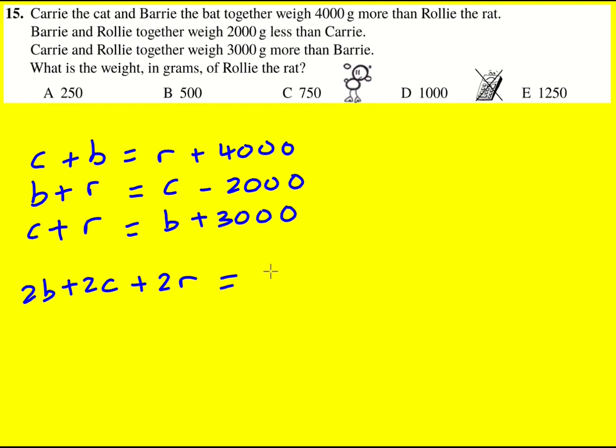So here, the reason is that we're going to get the same thing—we're going to get B + C + R on the right-hand side. And then I'm going to be adding these up, so I'm going to get 2B + 2C + 2R = B + C + R + 5000. Now I can subtract B + C + R from both sides and actually get B + C + R = 5000.